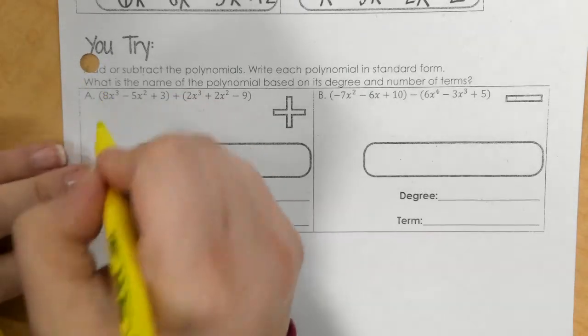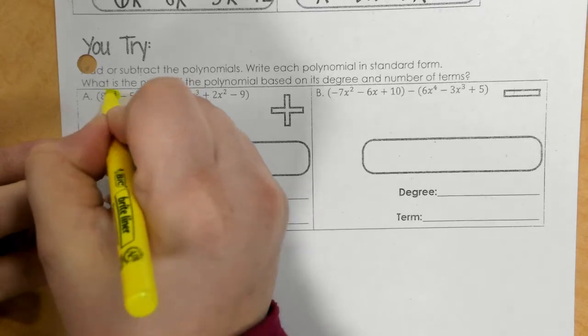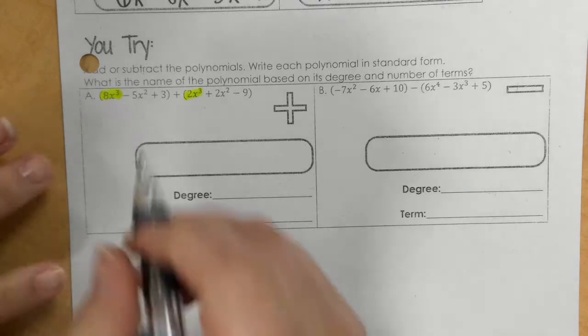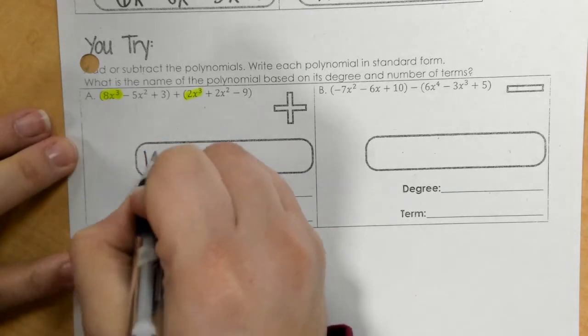So I have, highest exponent is a 3. And that would match up with 2x to the third. So 8 plus 2 is 10x to the third.